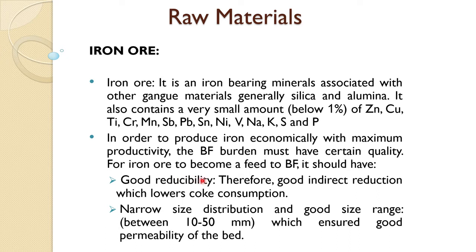Good reducibility should be accompanied by narrow size distribution and good size range. When we say good size range, it is usually between 10 to 50 mm, and preferably it should have a very narrow size range — maybe 80% of it should be around 40 mm or so. That ensures good permeability of the bed, which directly affects the productivity and efficiency of the blast furnace.